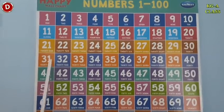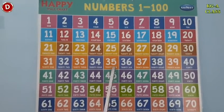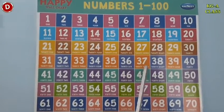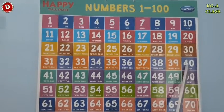After 30, next number is 31, then 32, 33, 34, 35, 36, 37, 38, 39 and here comes 40. 4, 0, 40.